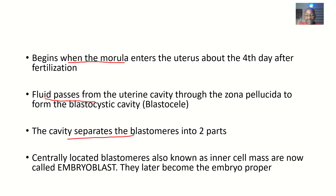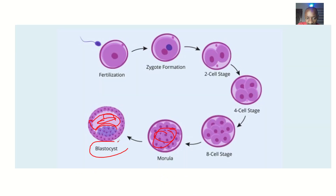The cavity separates the blastomeres into two parts. The centrally located blastomeres, also known as the inner cell mass, are now called embryoblasts, because they are the ones that will later become the embryo properly — developing into the human and the placenta. This is the embryonic pole where the placenta will actually come out to attach to the mom.